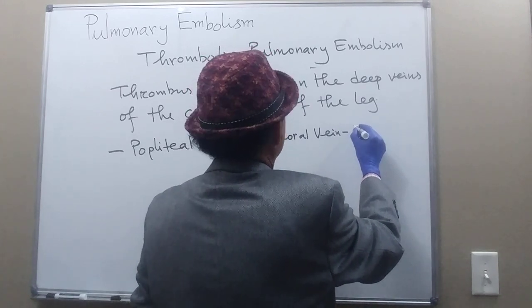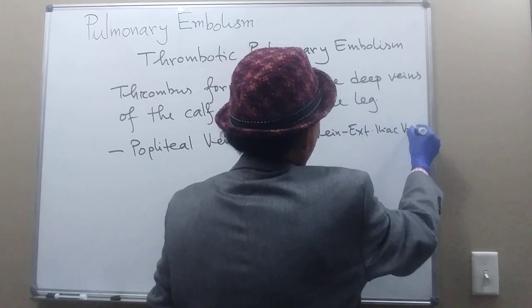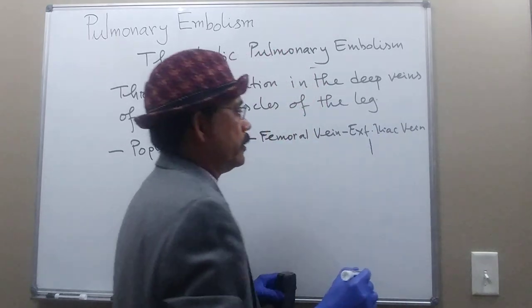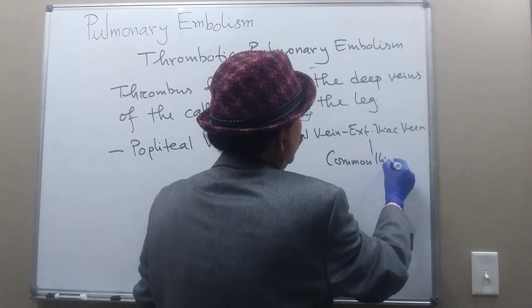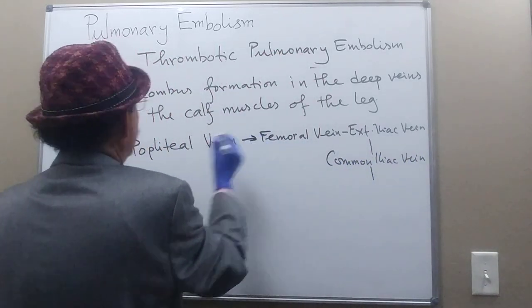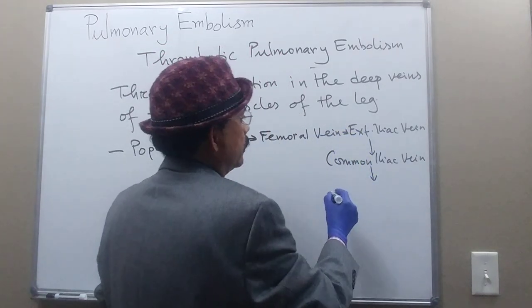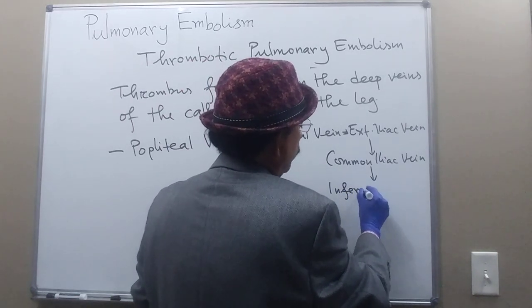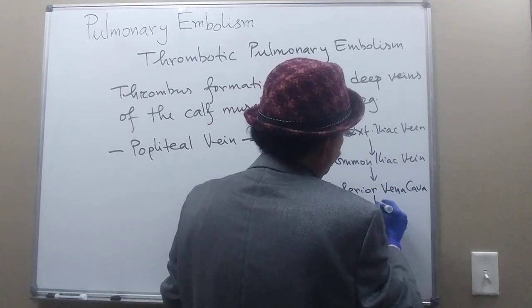From the femoral vein, the embolus goes to the external iliac vein, then to the common iliac vein, and from the common iliac vein to the inferior vena cava.